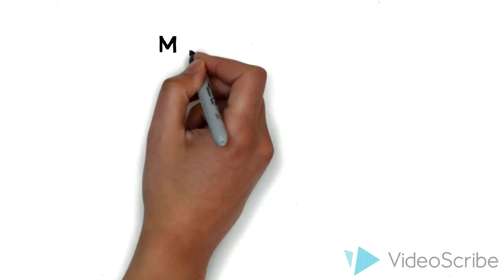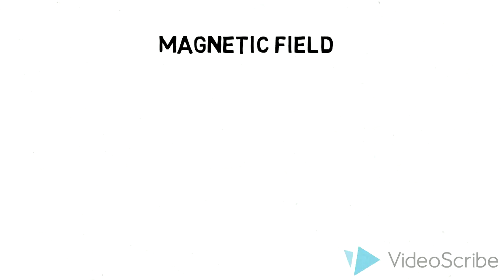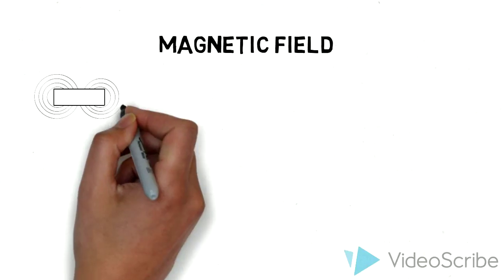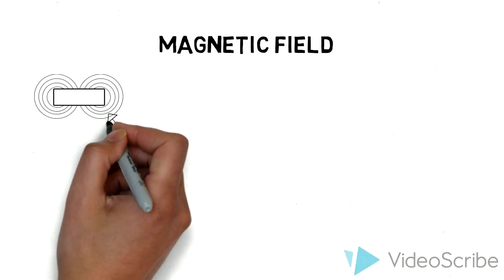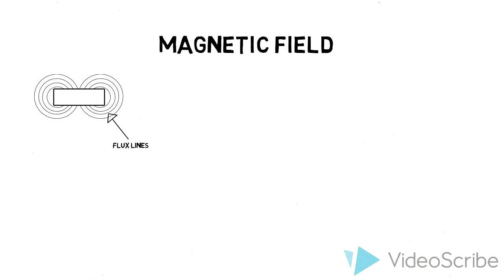A magnet's strength isn't the only important thing to think about. A magnet's magnetic field can be crucial in electrical and other specialized applications. As we learned earlier, a permanent magnet produces a magnetic field around itself. This field is made up of lines, called flux lines, flowing from the north pole to the south pole.